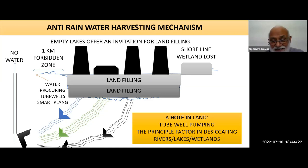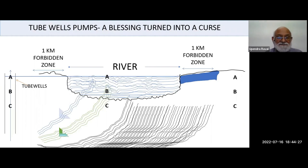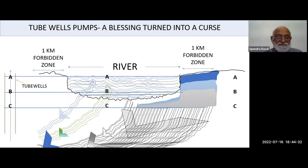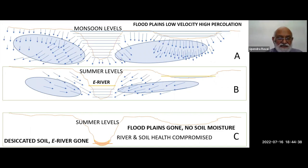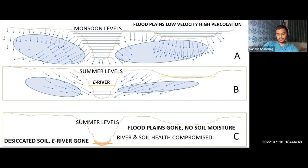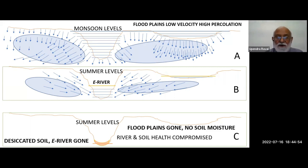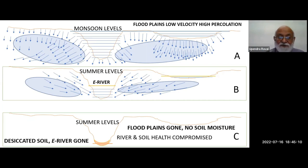Now we have no water — not only our rivers, our tubules are also going dry. These are various depictions: desiccated bottom part, desiccated soil, E-river gone. Ecological water requirement of river is all gone. In the top diagram, water percolates from the river and the floodplains. In summer, the flow is reversed, but the minimum river flow — one-third of flood flow — is maintained.